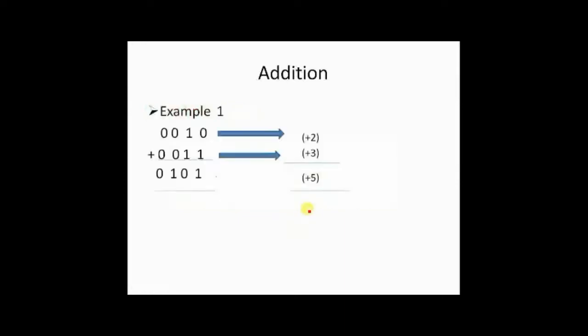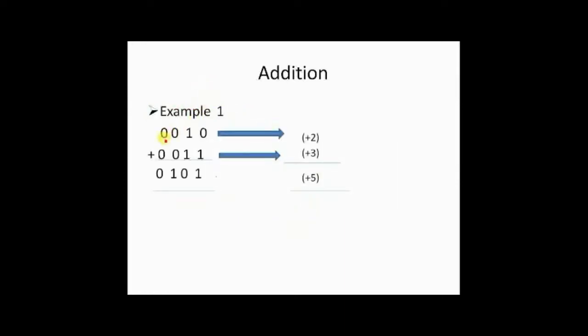The first example is we are adding 0010 plus 0011. So what is 0010? Whenever you have a 0, that indicates a positive number and the remaining 010 indicates 2. So you got plus 2. And 0011, since starting with 0 indicates that this is a positive number, so that is plus and 011 indicates 3. So we are adding plus 2 plus plus 3. So we will get plus 5. Let's see.